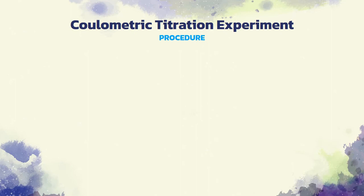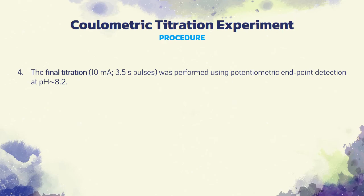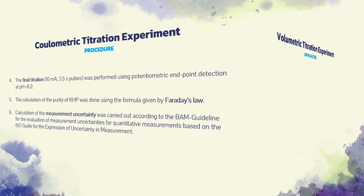The experimental procedure involves drying of the sample, performing the initial, main, and final titrations, and calculation of purity and measurement uncertainty.